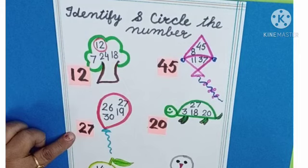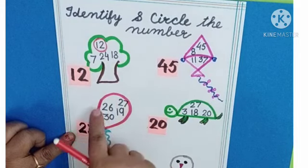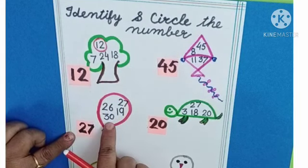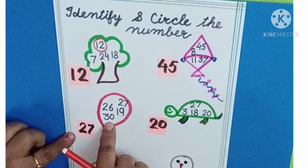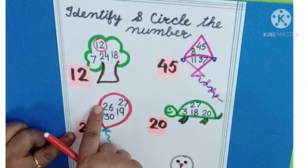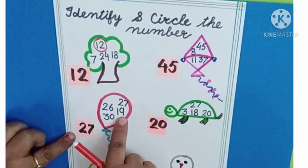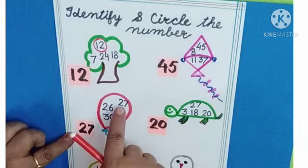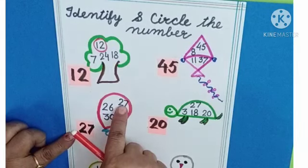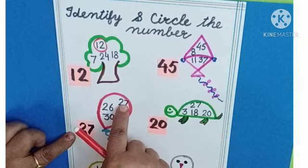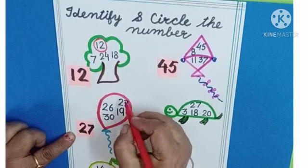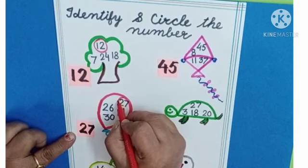Next number is 27. We have to search. Is this 27? No. Is this 27? No. Is this 27? No. Yes — this is number 27. We will circle this number.